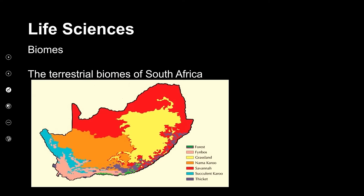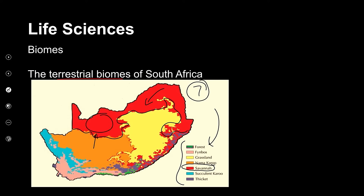This map indicates the distribution of our seven biomes. It's important that we recognize that each biome is characterized by the type of plants and animals found in that area. South Africa is home to seven distinct terrestrial biomes. Our savanna biomes, coded in red, form predominantly the largest biomes in South Africa, found predominantly in the Northern Cape, Namibia, the northern parts of Gauteng, and along the east coast of South Africa.